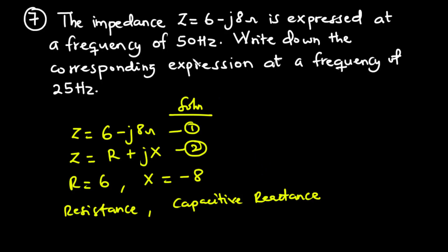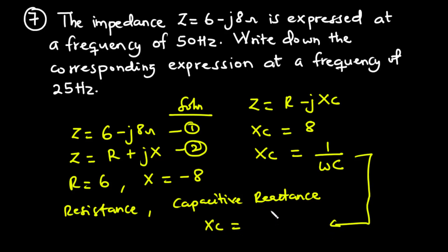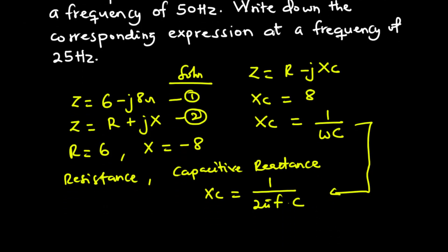Let's represent the impedance in the form Z equals R minus j XC. From this, XC is equal to 8. We know that XC equals 1 over omega C, and since omega equals 2 pi f, we will find the value of the capacitance at frequency 50 hertz.